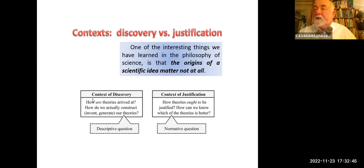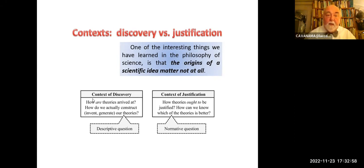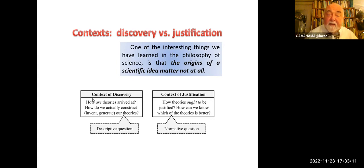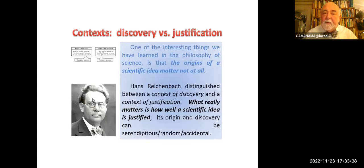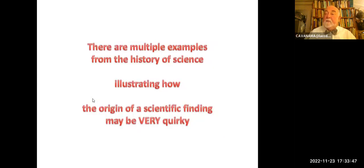And now let's ask whether origins matter at all to the philosophy of science. One of the interesting things we've learned there is that the origins of scientific ideas don't matter at all. Hans Reichenbach, some seventy-some years ago, first taught us to distinguish what he called the context of discovery and the context of justification. Context of discovery: how do discoveries get made? How are theories arrived at? How do we actually construct, invent, generate our theories? This is a descriptive question. And it is a completely different question from the question of justification: how theories ought to be justified, what we can know, how can we know which theories are better. This is a normative question, and it has nothing at all to do with the descriptive account of how these ideas come about. There are plenty of examples from the history of science which bear this out. What really matters is how well a scientific idea has been justified; its origin as serendipitous, random, or accidental is irrelevant.